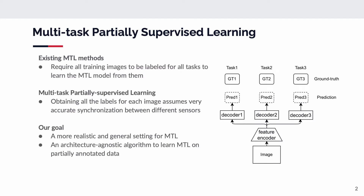Existing multi-task learning methods require all training images to be labeled for all tasks to learn the multi-task learning model from them, as shown in the right figure. However, obtaining all labels for each image requires very accurate synchronization between the sensors, as collecting the dataset typically involves using multiple sensors to collect annotations for multiple tasks. So it is more common and realistic that the collected dataset is partially annotated — in other words, not all task labels are available in each training image.